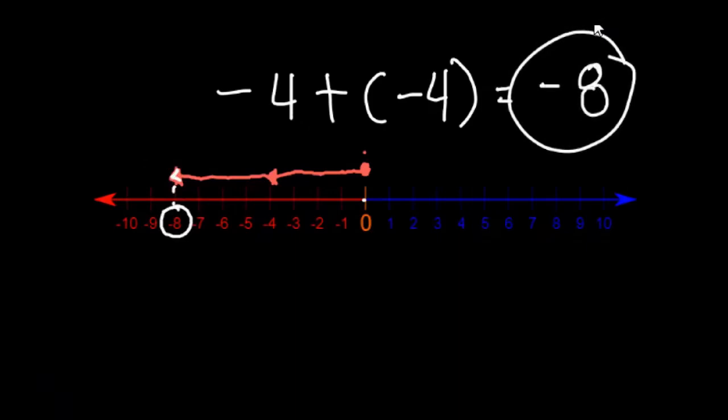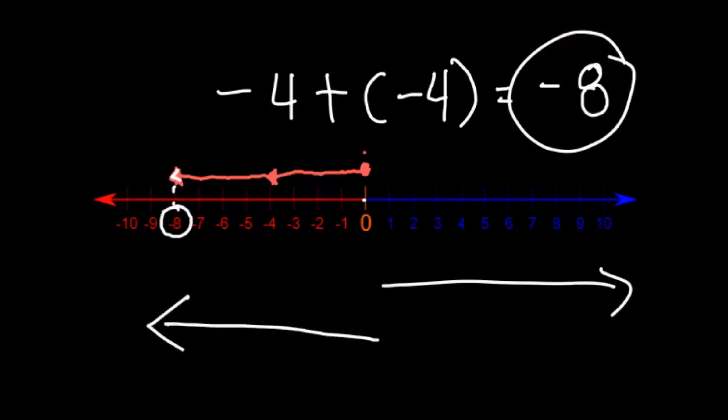That is how you add two integers using a number line. Tandaan nyo lang: begin kayo sa 0. Mag-move kayo sa mga places depende sa sign ng integers. Kapag positive, punta po kayo sa right. Kapag negative, punta po kayo sa left.